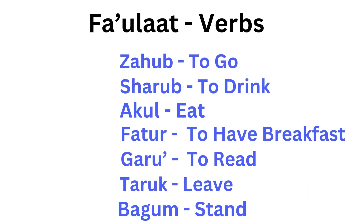Fa-ulat — verbs. These are the verbs I'm going to show you in their command form. AUX meaning: we have the verb Zahub, to go. I'm going to show you the command form of to go, which means go; or drink, meaning to drink — like you're telling somebody to drink; or eat, meaning you're telling somebody to eat, like a command. So we're going to put this in a command form.